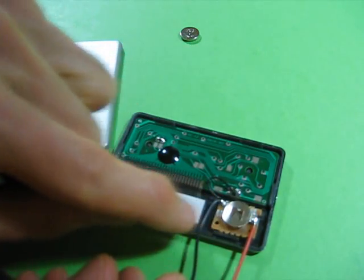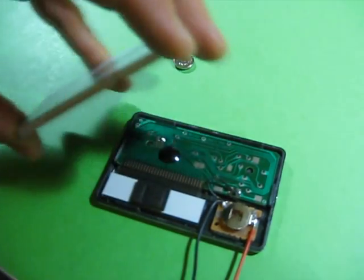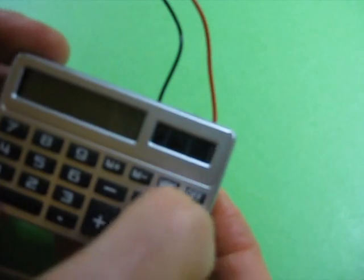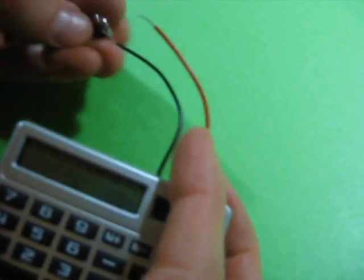So I've soldered some wires to where the battery went. I'll just put the case on and try it out. Okay, it's all reassembled here. And if I try pushing the on button, nothing happens because there's no battery inside and the solar cell is not connected to anything.